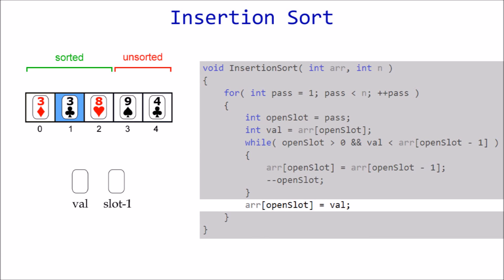With only one unsorted element left, it's time for the fourth and final pass. Open slot is set to index 4, and value is set to the 4 of clubs. Entering the while loop, we find that 4 is less than 9, and less than 8, but not less than 3. So the 4 is inserted at index 2. The cards are now sorted.